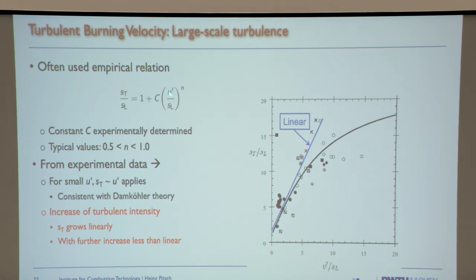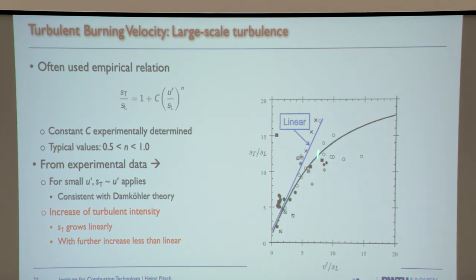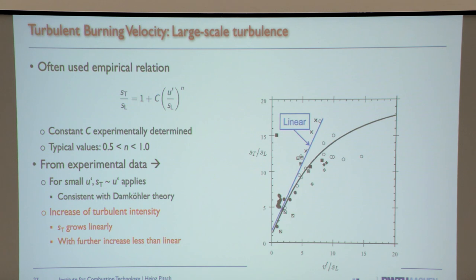For large u', when you go to stronger turbulence, it doesn't follow this linear line anymore. It also doesn't seem to be universal — the turbulent burning velocity cannot be expressed by only one parameter, because the data is all over the place.